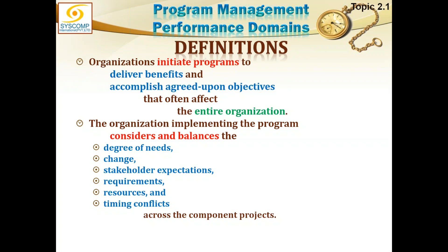You have to prioritize and balance your components within the program. Look at which component has the greatest degree of need, where change is most prominent, what the stakeholder expectations and resource requirements are. The most resource-hungry component may not get priority. We also consider timing conflicts — similar to a critical path in project management, there is a critical path concept in program management too. All these aspects must be considered in orchestrating program components.